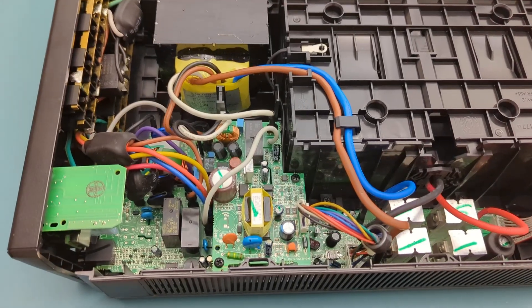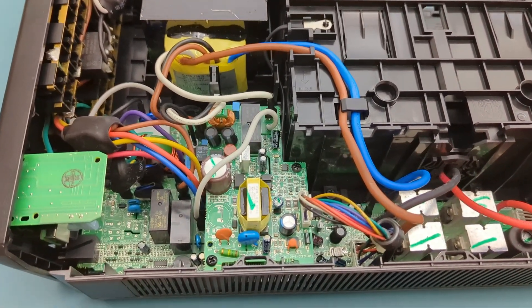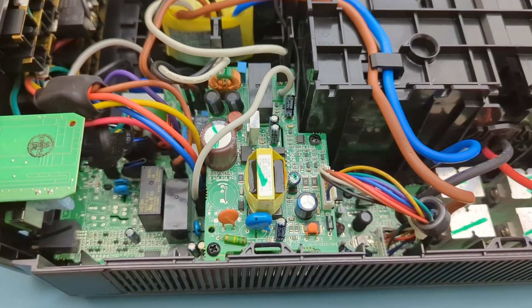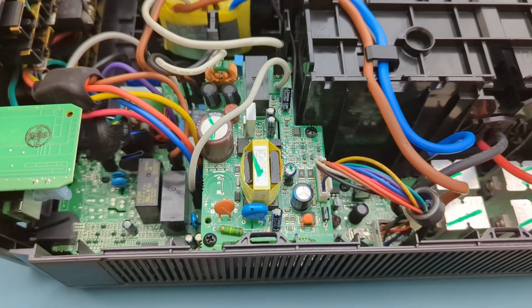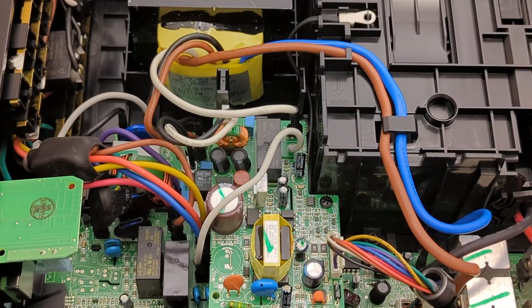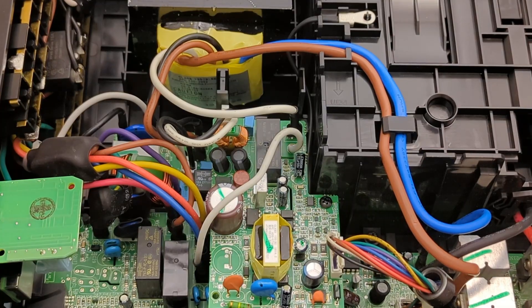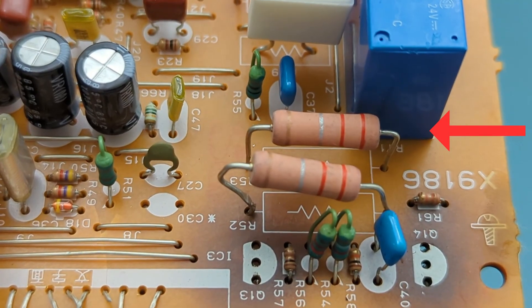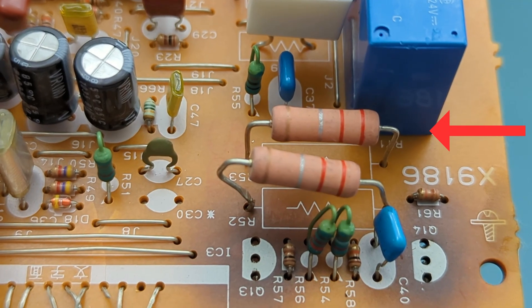Heat rise depends on two things. How much power the part turns into heat, and how easily that heat can leave. A bigger body lets heat escape faster because it has more surface area to dump heat into the air and more material to spread the heat out, so no single spot gets too hot. This means a bigger resistor has lower thermal resistance and runs cooler at the same power.